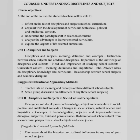Unit 1 is Discipline and Subject: discipline and subject — meaning, definition and concepts; distinction between school subject and academic discipline; importance of knowledge of discipline and subject; need and importance of studying school subjects; curriculum content — meaning, definition and importance; John Dewey's idea on disciplinary knowledge and curriculum; relationship between school subject and academic discipline. Unit 2 is Discipline and Subject in Socio-Cultural Perspective: emergence and development of knowledge, subject, and curriculum in social, political, and intellectual context; changes in social science, natural science and linguistic; concept of knowledge — firm, objective and impersonal; diverse, dialogical, subjective, fluid and porous frame; redefinition of school subject from socio-cultural perspective — school subject and school justice.